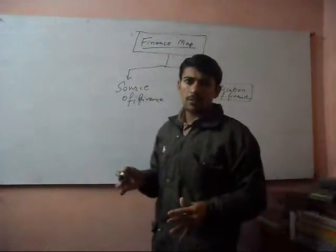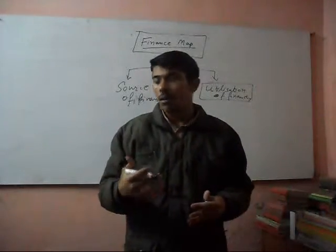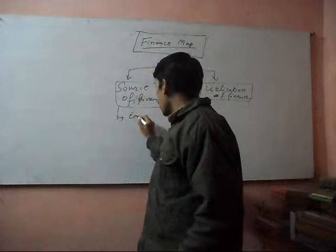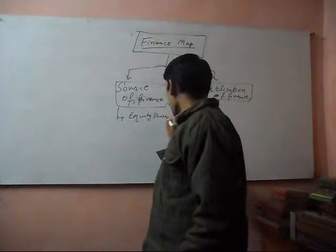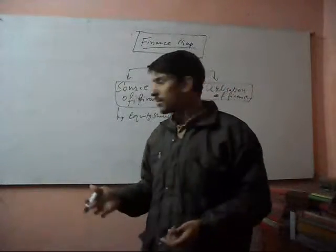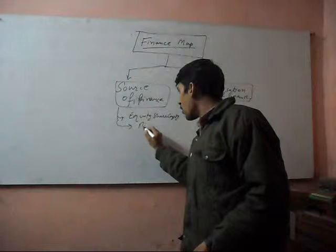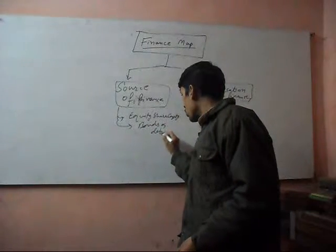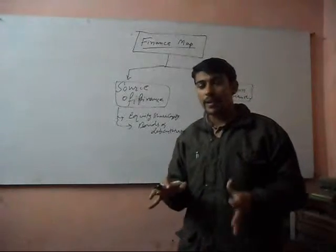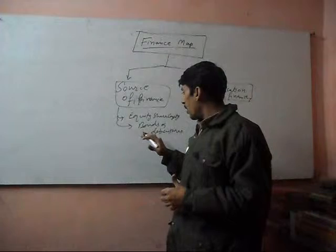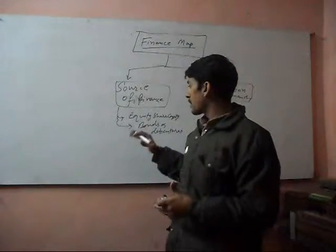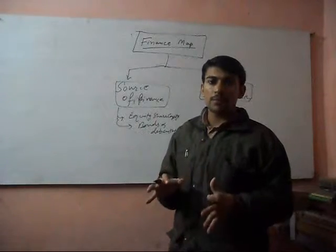There are several sources of finance from which we get money. One is equity share capital — if a company issues shares, the company gets money from shareholders. Second is bonds or debentures. This is the source of finance in which we get money from our debenture holders. The company issues a loan certificate called a bond or debenture and gets money at a fixed interest rate.